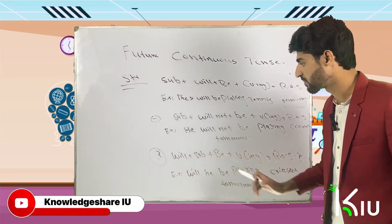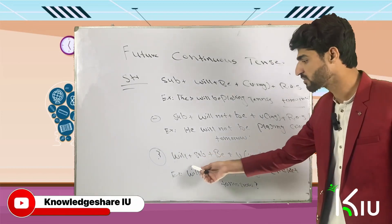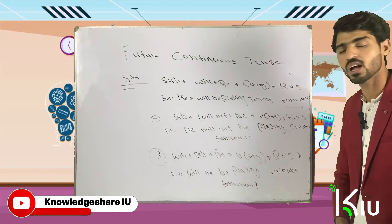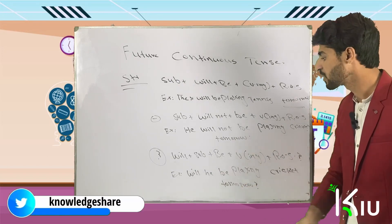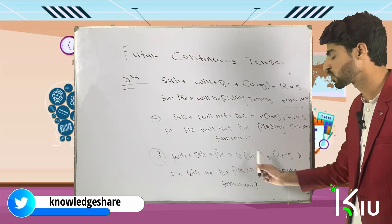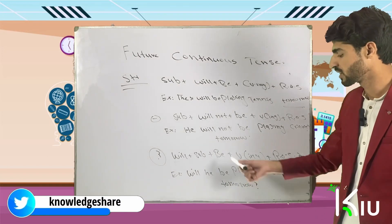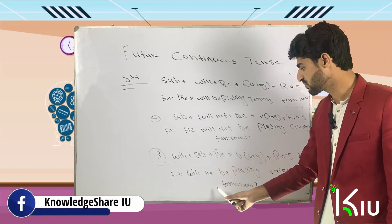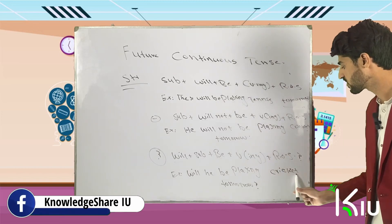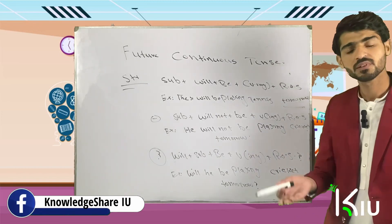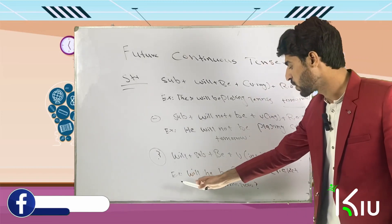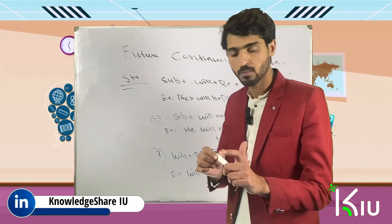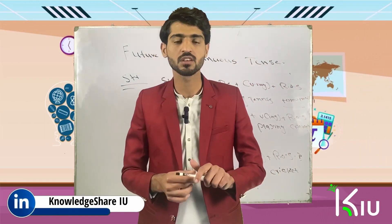For interrogative sentences, the structure is: 'will' first, then the subject, then 'be,' then verb-ing, and then the rest of the sentence. So the sentence will be: 'Will he be playing cricket tomorrow?' That was all about future continuous tense. If you have any kind of question, you can ask.